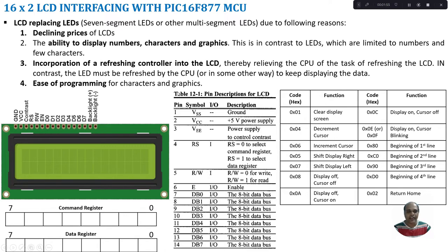Now let us look at the pin details of 16x2 LCD. It has 16 pins. The first pin is a ground line, second pin is a supply line VCC, and the third pin is for contrast adjustment. Each character in the LCD is made up of pixels, and this pixel grey level can be adjusted. By connecting a potentiometer to this pin and adjusting the voltage, we can adjust the grey level of the pixels.